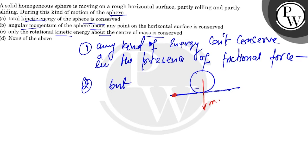mg is acting downward, normal reaction is acting, and friction is acting.